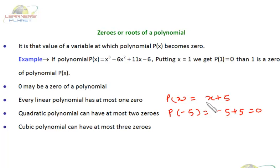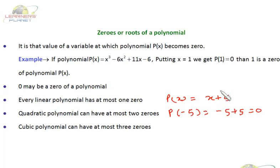We call it a linear polynomial because the exponent of the variable is just 1. So we will have just one zero for this polynomial — there is just one root. We cannot have more than one root for a linear polynomial. No other value of x will make this expression 0 except -5, so you have only one choice.